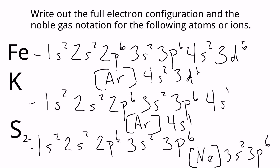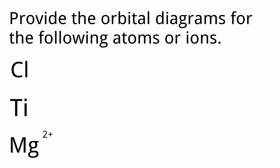Now let's look at orbital diagram practice. You'll provide orbital diagrams for chlorine, titanium, and the magnesium 2-plus ion. Remember with ions we're adding or removing electrons. For Mg²⁺, we've lost two electrons from magnesium's neutral state. Pause the video, work through these, and then we'll review the answers.